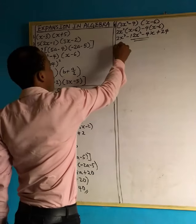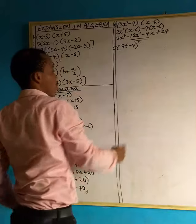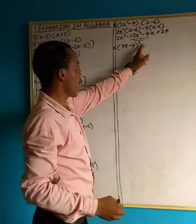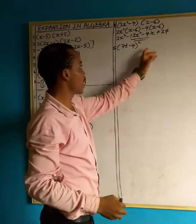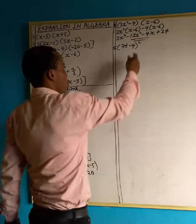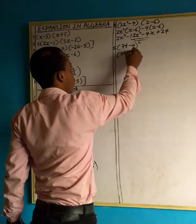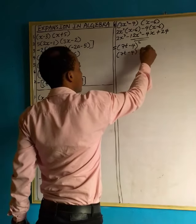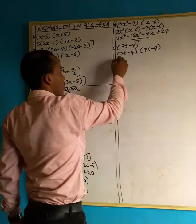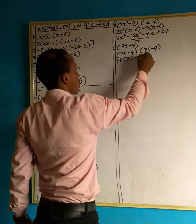Question 5: we have 7t minus 4, to the power of 2. When you see a problem like this — when you see this square — it means you double up the brackets. If it is to the power of 3, you make it 3 brackets. Since it is to the power of 2, we write: bracket 7t minus 4, times bracket 7t minus 4. Now let's expand.